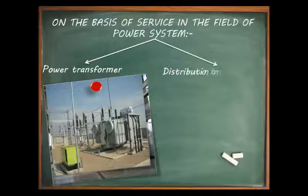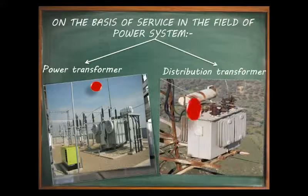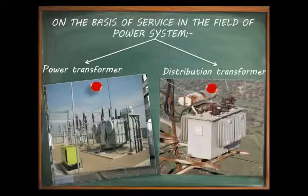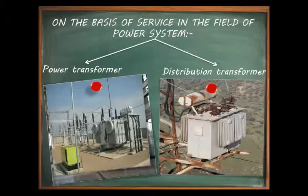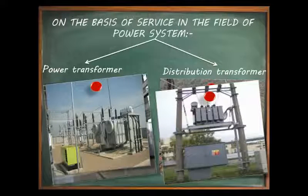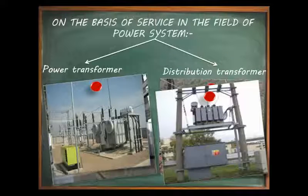The second type is the distribution transformer, used for lower voltage distribution to provide user connectivity — the transformer we see near our houses. It is used for distribution of electrical energy at voltages less than 33 kV for industrial loads, and 450 V to 220 V for domestic loads, with efficiency of 50 to 70%, making them smaller in size. As distribution transformers are directly connected to the consumer, load fluctuations are very high.